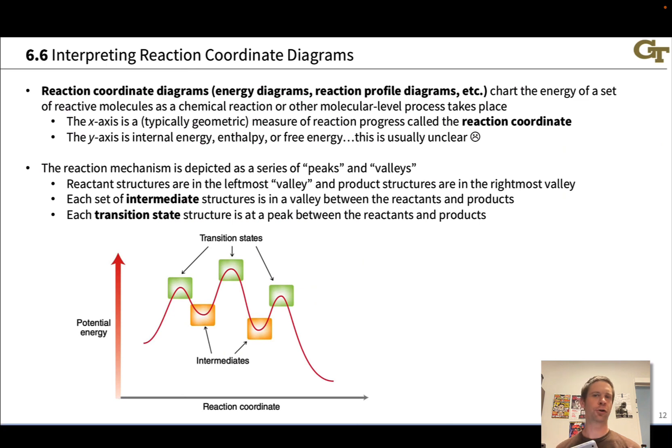Reaction coordinate diagrams, which are also known as energy diagrams, energy profile diagrams, reaction profile diagrams, they go by many names. These are a concise representation of the kinetics and thermodynamics of a reaction mechanism. They show how the energies of all the reactants and structures derived from the reactants change as chemical change takes place, as electrons move, bonds are made and broken, so on and so forth, and the reactants are ultimately converted into the products.